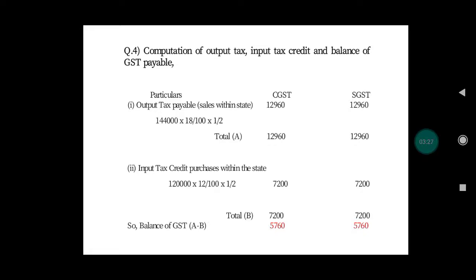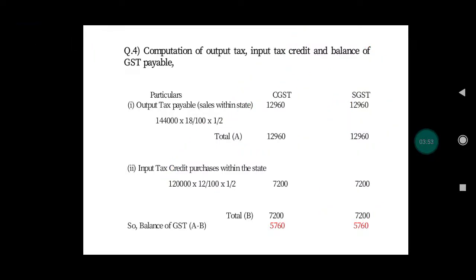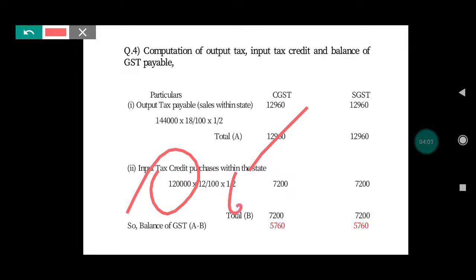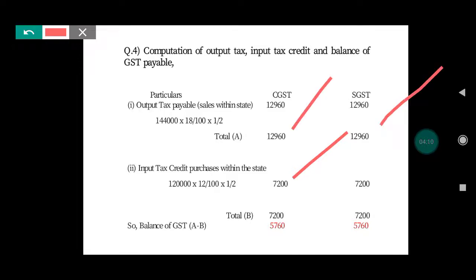To summarize: output tax is calculated from sales of 1,44,000 at 18% giving CGST and SGST of 12,960 each; input tax credit from purchases of 1,20,000 at 12% giving CGST and SGST of 7,200 each; and balance GST payable is 5,760 each for CGST and SGST.